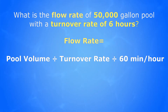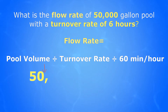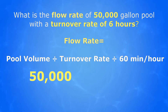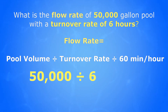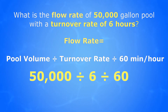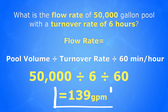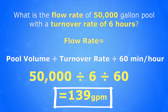So let's go ahead and fill this in. Our volume is 50,000 gallons, so that would go right here. Divided by our turnover rate, which in the problem is six hours. And then we divide that by the 60, which is part of the formula. If we calculate all that out on our calculator, you would get an answer of 139 gallons per minute. And that would be the flow rate of this 50,000 gallon pool.